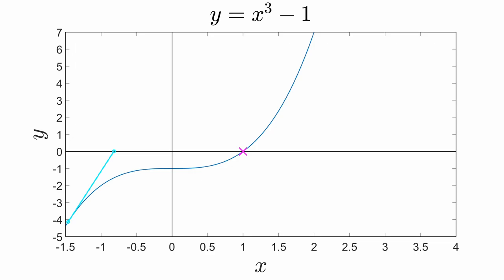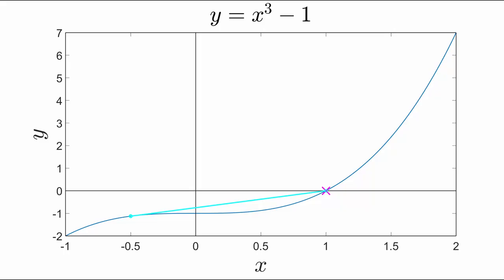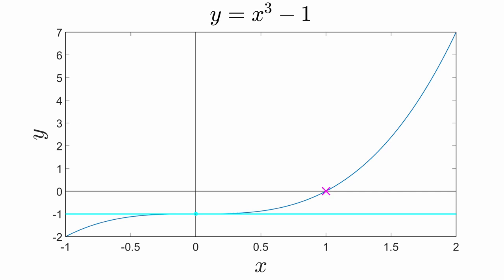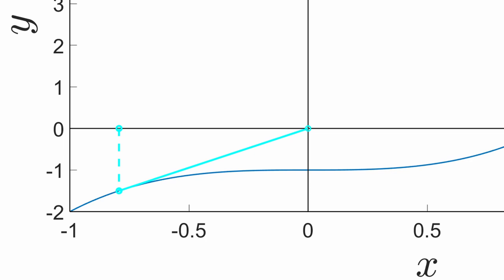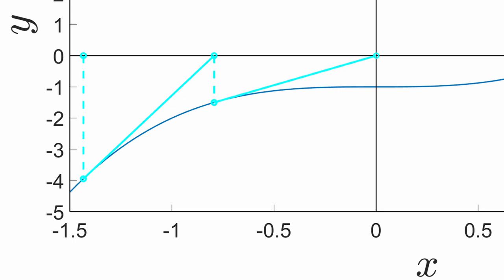Let me point out some interesting values of x₀. There is a special value of x₀ = −1/2 which converges to the root with only one iteration. But more importantly, the value x₀ = 0 doesn't converge. We say that x₀ = 0 is an escape point of the iteration because the iteration shoots off to infinity. There are other escape points: the value x₀ around −0.8 is also an escape point because it ends up at x = 0 after one iteration. So is the value x₀ around −1.4, because it ends up at x = 0 after two iterations. In fact, there are an infinite number of escape points lying on the negative x-axis.